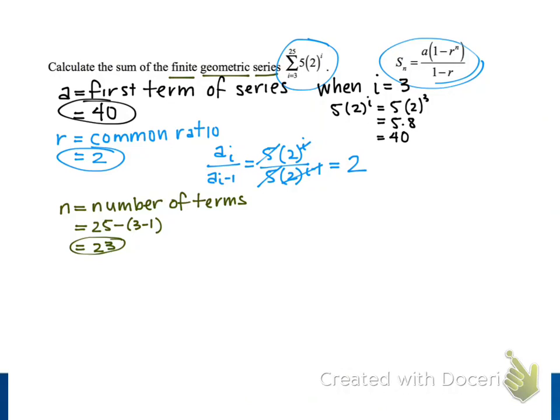Now that we have the value for our three variables, we can calculate the sum of our series using the formula on the right. So the sum of our series is 40 multiplied by the quantity 1 minus 2 to the 23rd power, and then we are going to divide that by 1 minus 2.